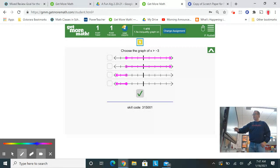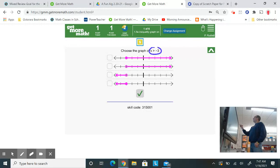So in this problem, we want all the numbers shaded that are greater than negative 3. So 0 is here. So 1, 2, 3. So here's negative 3.